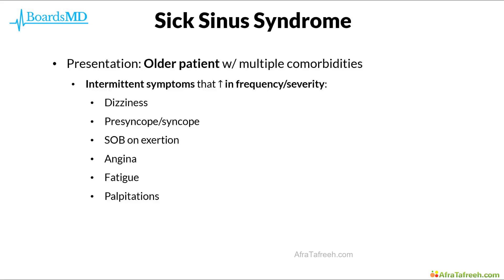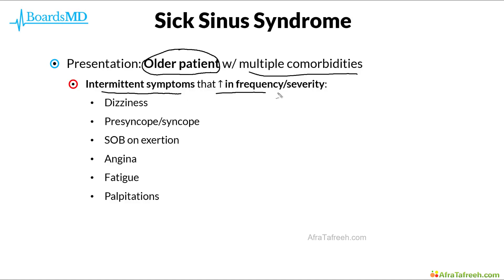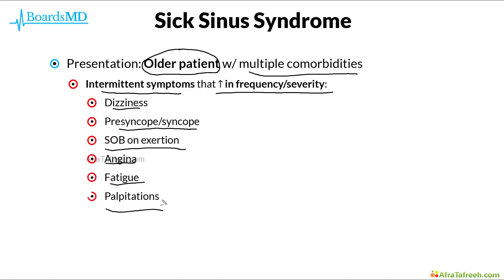Moving on to sick sinus syndrome, our classic patient for this condition is going to be an older patient with multiple comorbidities. These patients classically will have intermittent symptoms, however the frequency and severity of these symptoms is going to increase over time. These symptoms include dizziness, presyncope or syncope, shortness of breath especially on exertion, angina, fatigue, and palpitations.